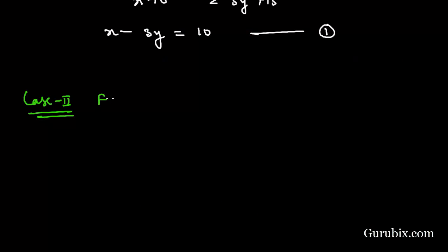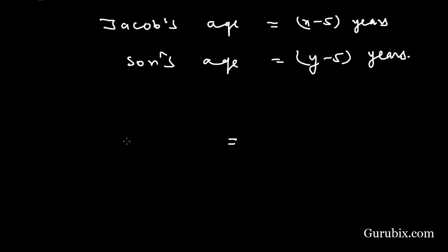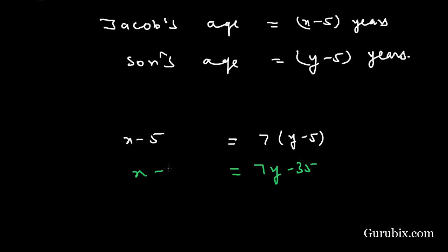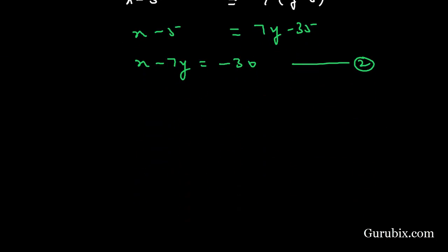In Case 2, five years ago, Jacob's age was X minus five years and his son's age was Y minus five years. The condition is that Jacob's age was seven times that of his son. Multiplying the son's age by seven gives seven Y minus thirty-five. Setting X minus five equal to seven Y minus thirty-five gives us X minus seven Y equals minus thirty. This is Equation 2.